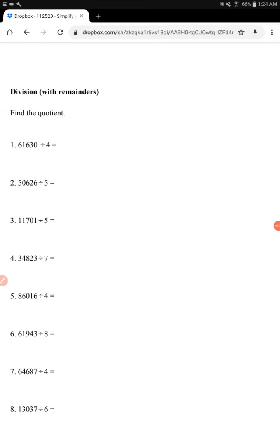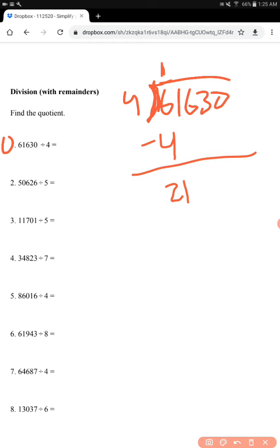Now, division with remainders. Let's try number 1 again. 61630 divided by 4. So 4 can go into 6 exactly one time. Or it can go into 6, 1, 6, 1, 6, 3, 0.